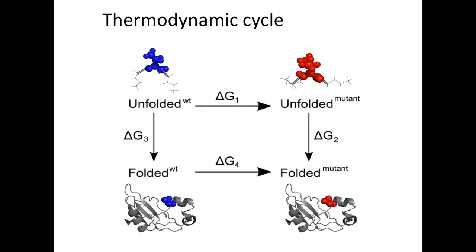A similar thermodynamic cycle applies to protein folding. The folding process itself might take milliseconds or longer, making it inaccessible in simulation. But if we are interested in how a mutation affects the folding free energy or stability, we can make an alchemical transformation of one amino acid into another — here from blue to red — once in a model of the unfolded state and once in a model of the folded state. The difference in alchemical free energies equals by definition the difference between the folding free energies of the native versus the mutated protein.